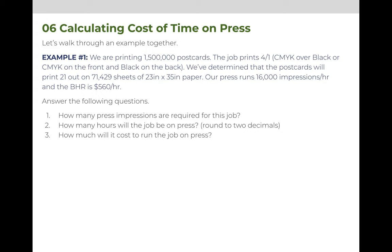We've determined that the postcards will print 21 out on 71,429 sheets of 23 by 35 inch paper. Our press can run 16,000 impressions per hour, and we charge $560 per hour for that press. To calculate the cost for the time on press, we must first calculate how many press impressions are required for the job, then how many hours it will be on press, and then ultimately how much it will cost for that time.